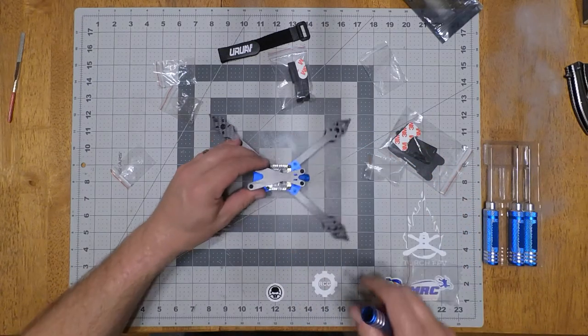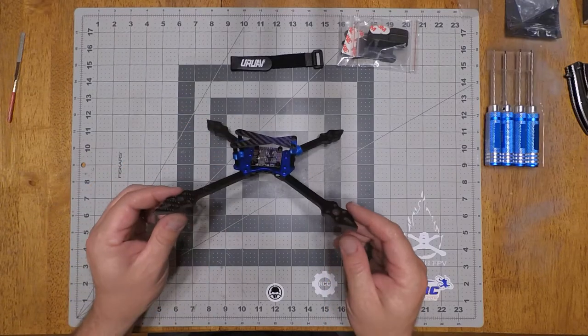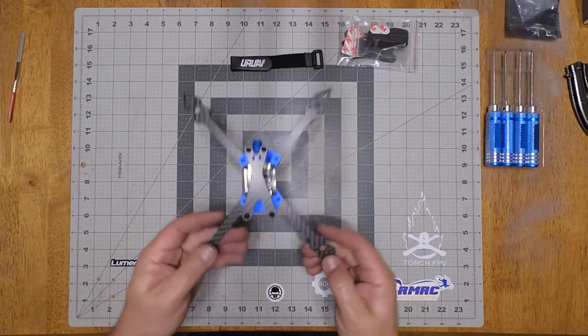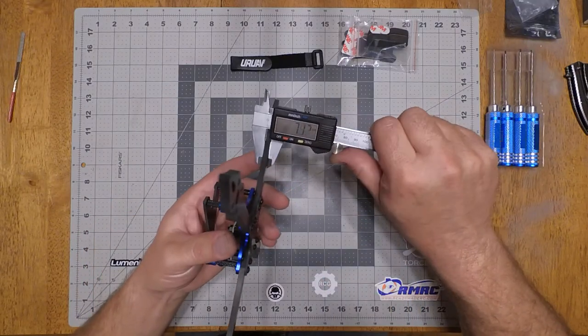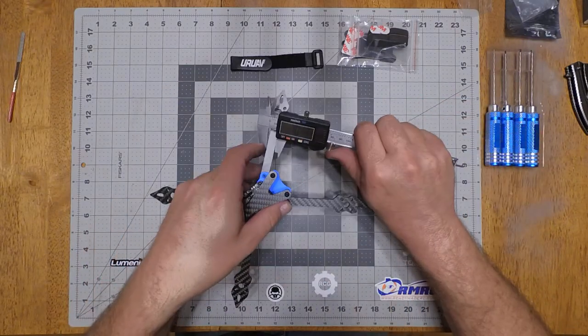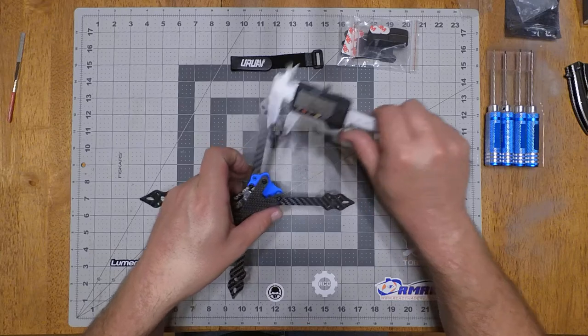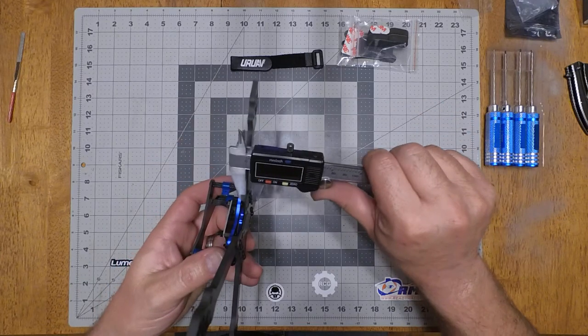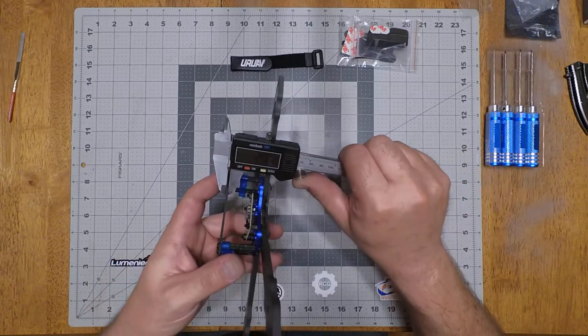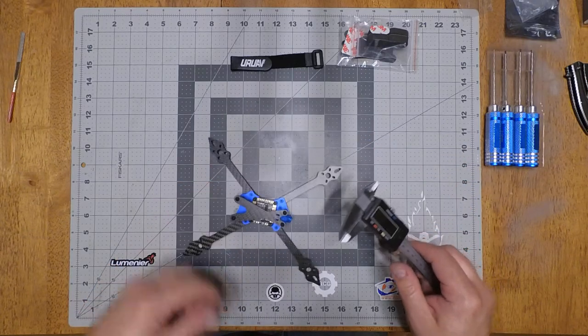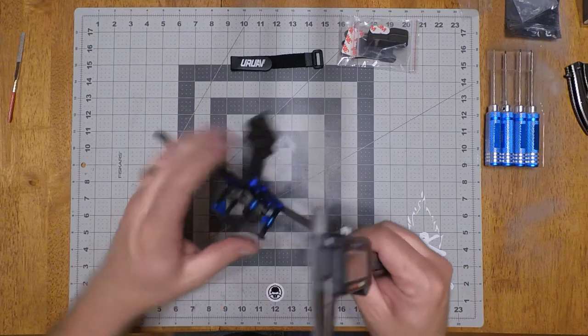So there's the frame all put together. I'm gonna grab my caliper and get some measurements. The arms 5mm by 10mm. Bottom plate 2mm. The aluminum plate 3mm. Top plate's gonna be 2mm. And then between the camera it's gonna be 18mm.